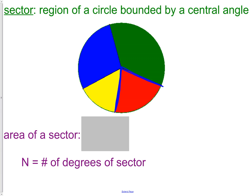If you remember back to our study of circles, this piece here would be called an arc, and this piece in here would be called a central angle. It's a central angle because it's off of the center of the circle.